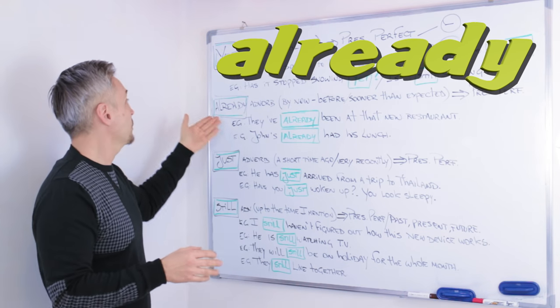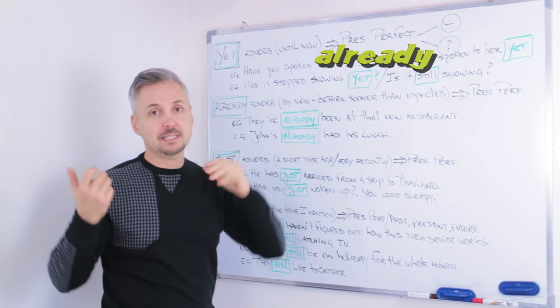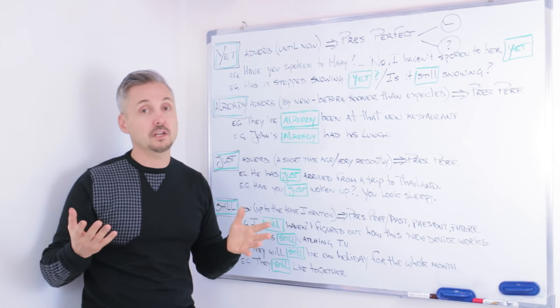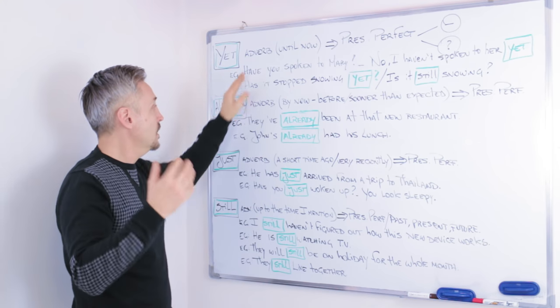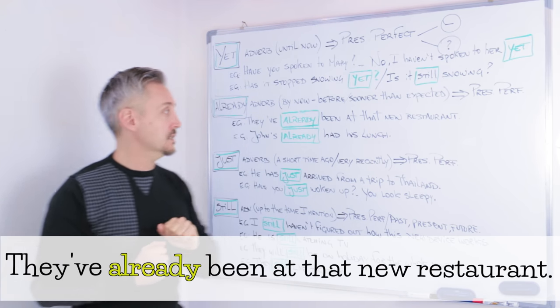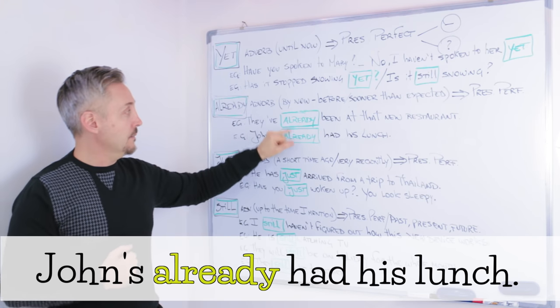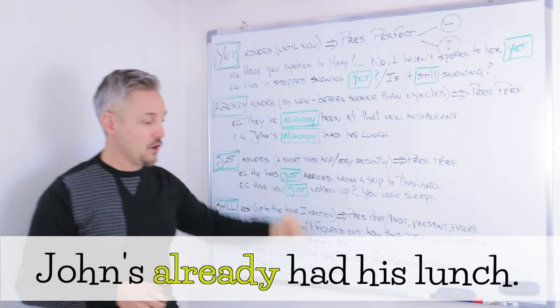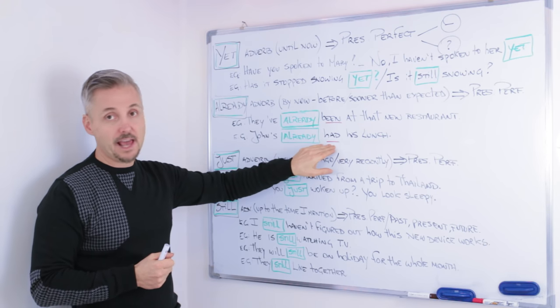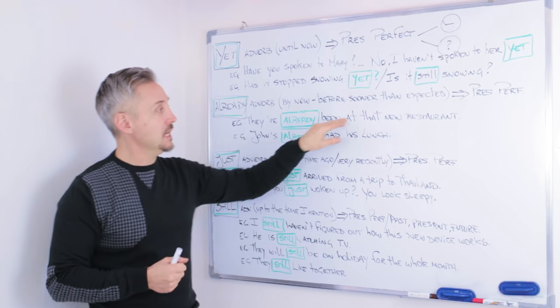So let's take a look at already now. Already is an adverb. And it means by now or before, sooner than expected. We use this adverb of time with the Present Perfect Simple and Present Perfect Continuous. We use it in these cases. For example, on my introductory example, they've already been at that new restaurant. And the second example that I'm going to give you is, John's already had his lunch. Look at already. Where is it placed? Yes, before the main verb. These two are the main verbs and the past participles of be and have. So they are placed before. So John's already had his lunch. They've already been at that new restaurant.